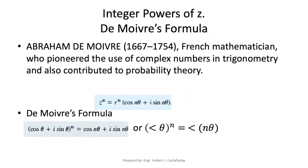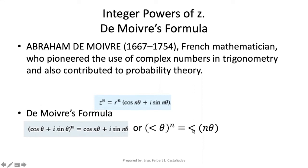Integer powers of z, or De Moivre's formula. Abraham de Moivre was a French mathematician who pioneered the use of complex numbers in trigonometry and also contributed to probability theory. De Moivre's formula states: z raised to n equals r raised to n times (cosine nθ plus i sine nθ). Similarly, (cosine θ plus i sine θ) raised to n gives cosine nθ plus i sine nθ — you simply multiply the argument theta by the power n.